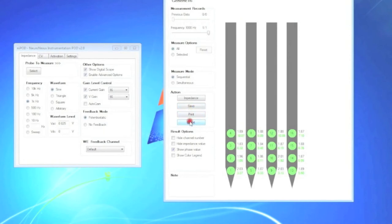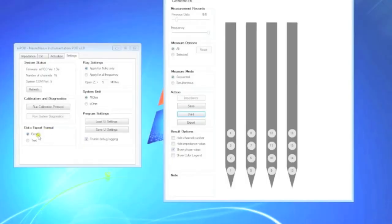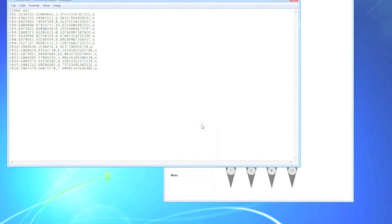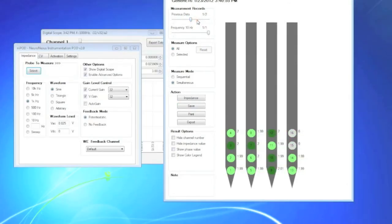You can export it to either an Excel spreadsheet or to a text file, which looks like this. Or you can save the data and view it later by scrolling through the measurement records at the top of the probe visualization interface.